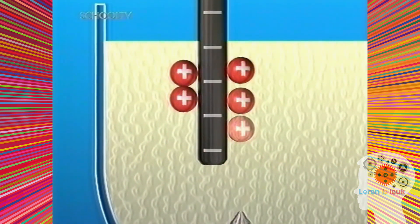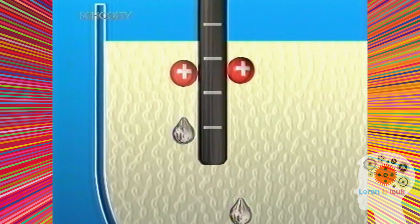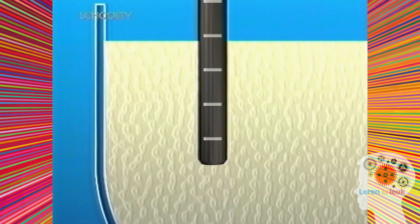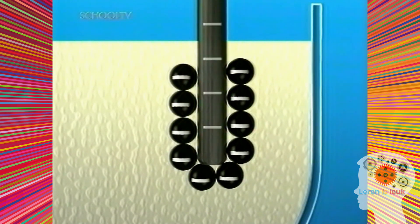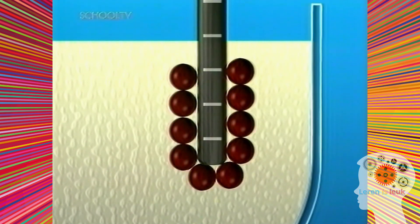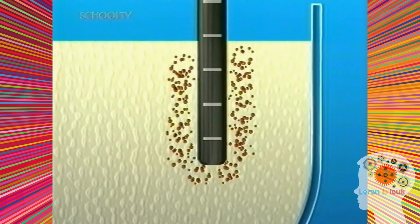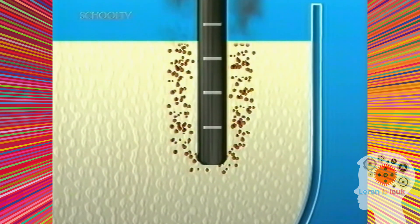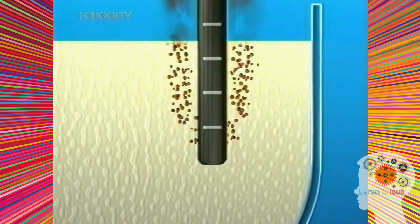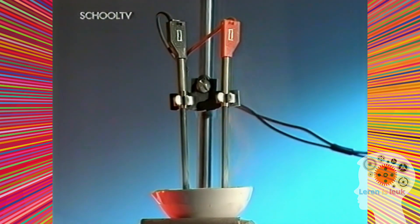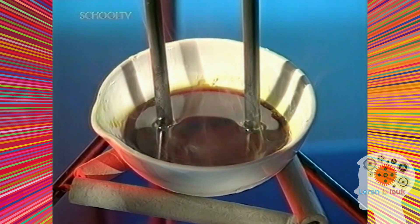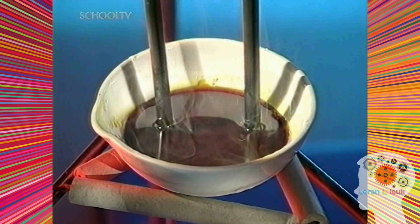Loodionen nemen elektronen op. Ze raken hun positieve lading kwijt en er ontstaan loodatomen. Bromide-ionen geven elektronen af. Zij verliezen hun negatieve lading en worden bromatomen. Het broom ontsnapt als gas. Elektrolyse van loodpromide lukt alleen als de verbinding gesmolten is.